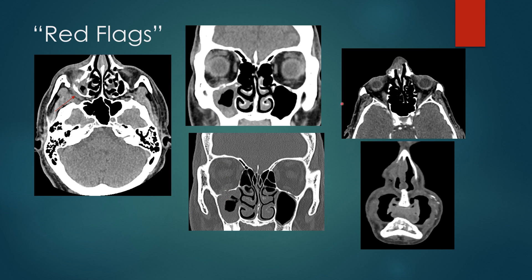In the nasal cavity, look for bone destruction. Here you can see the nasal bone is present on one side, but on the right side soft tissue is present with the bone absent — and on the coronal view there is disruption of the bone. Destruction of the bone suggests a more aggressive process and is a red flag to look for tumor or aggressive infection.